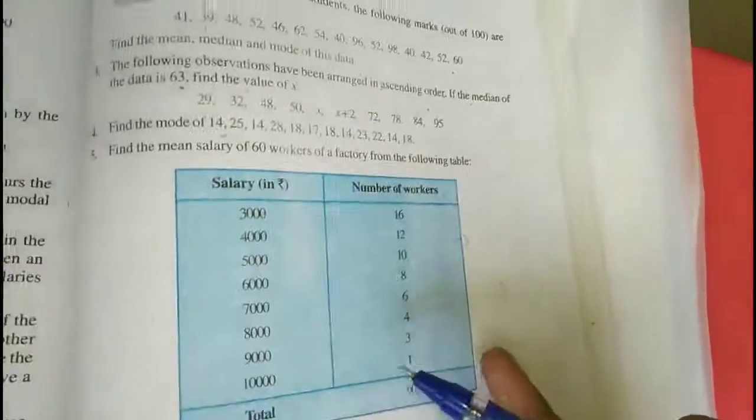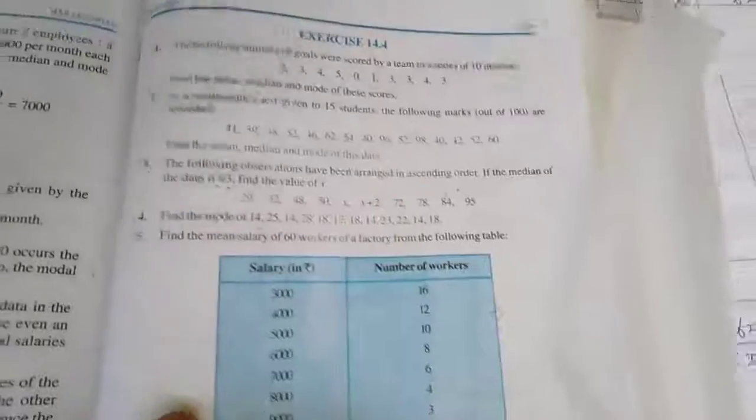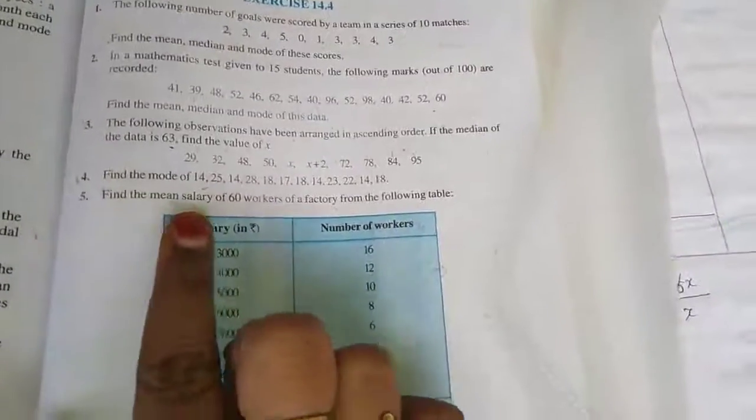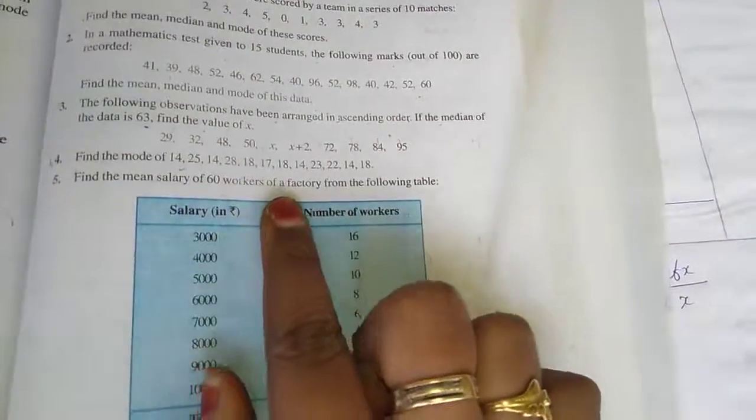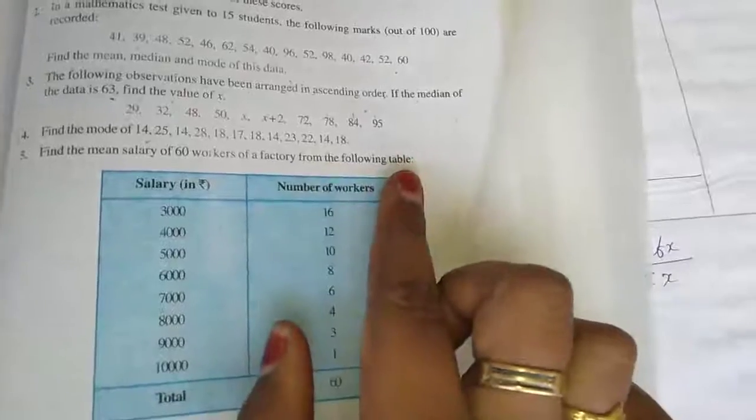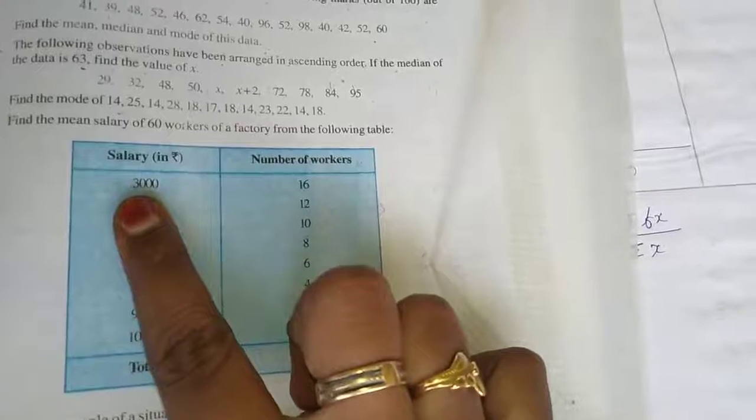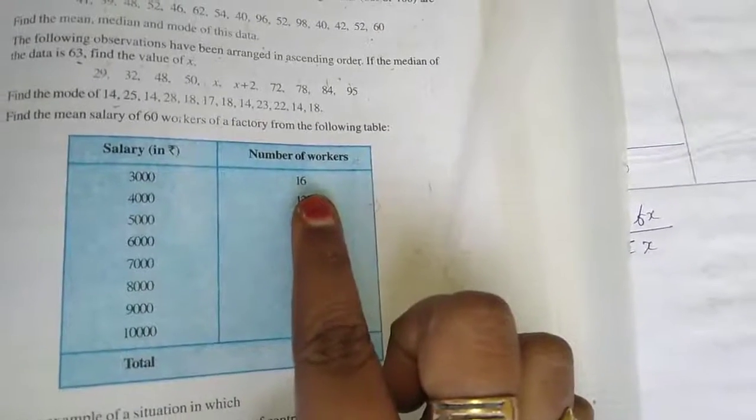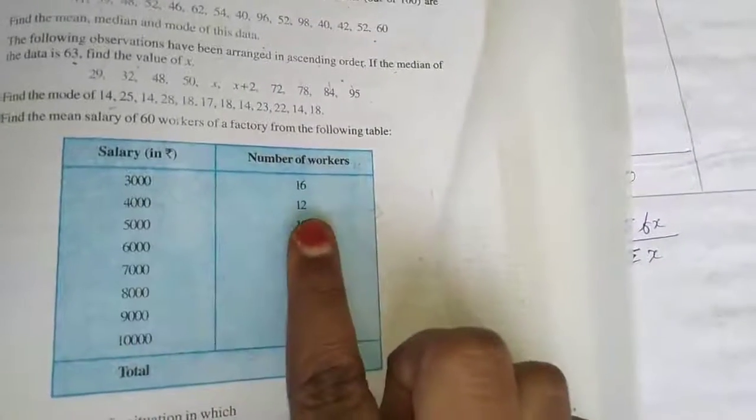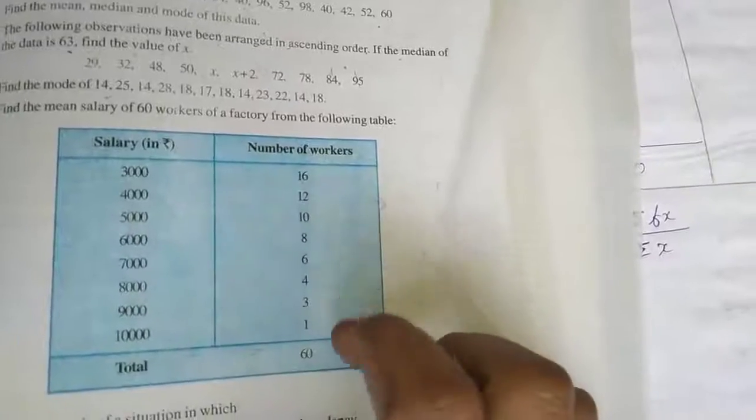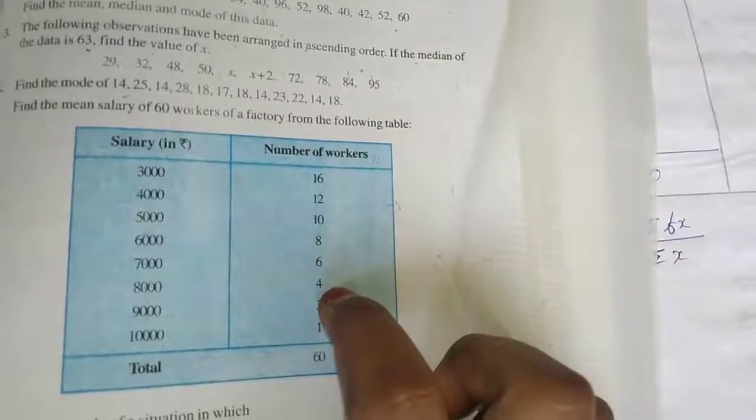Now I am moving to the 5th sum. The 5th sum is find the mean salary of 60 workers of a factory from the following table. They are giving the salary details and also number of workers. That means 3,000 salary, there are 16 members getting 3,000 salary. 4,000, 12 numbers. 5,000, 10 numbers. Like that they are giving the data. For this we want to find out the mean.